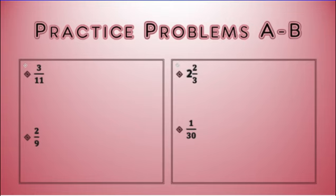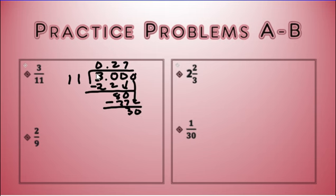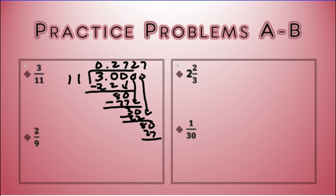Next example — 3/11. I want to do the same thing. So this would be 3 divided by 11. 11 goes into 30 two times. 2 times 11 is 22. Subtract and get 8. Bring down the 0. 11 goes into 80 seven times. 7 times 11 is 77. Subtract and get 3. Bring down the 0. And you can see that since it was 30, we go right back to the beginning — so 27 is repeating. My answer would be 0.27 repeating.